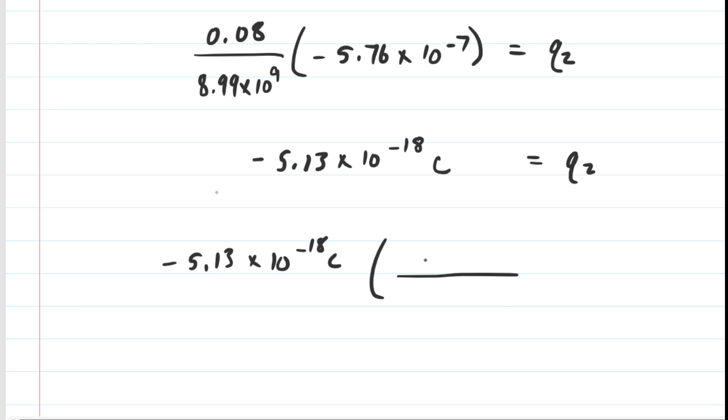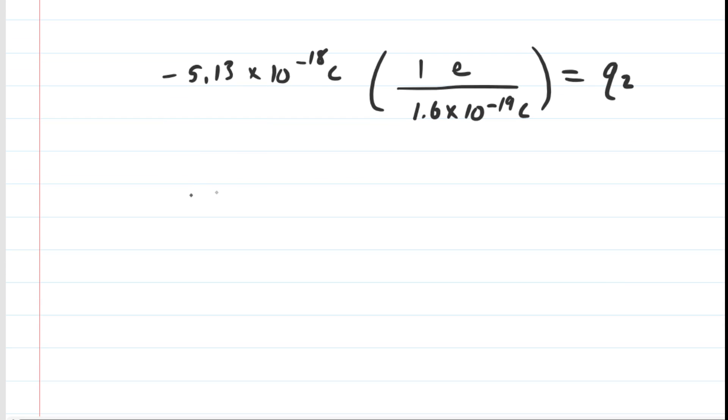And let's recall that one elementary charge has a magnitude of 1.6 times 10 to the negative 19th coulombs of charge on it. So we're going to basically divide by that 1.6 number. And when we do that, we get negative 32.